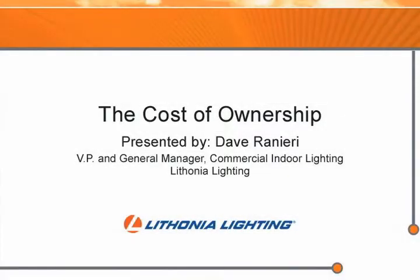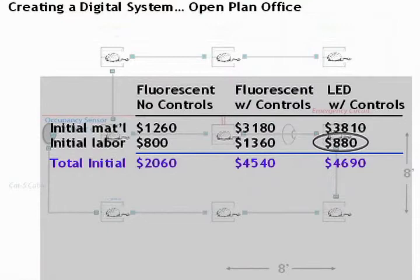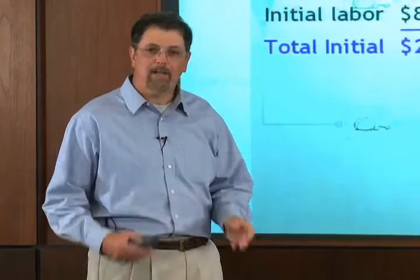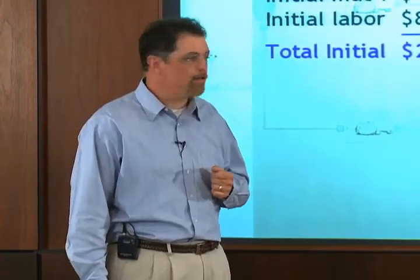Most commercial applications today do require some type of controls. In this case, we have an open plan office with nine luminaires. And if you install the system without any type of control, a conventional fluorescent system without any control, you can see that the initial cost is going to be quite a bit lower. But if you do compare the LED system with controls with a comparable fluorescent system that also uses dimming control, you can see that the initial cost difference is very close. And that's mainly due to the reduced cost of the equipment and the labor to install the controls initially.